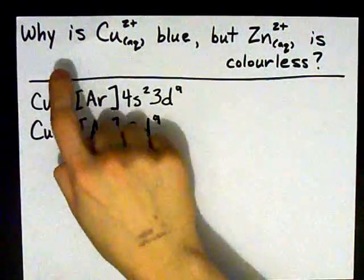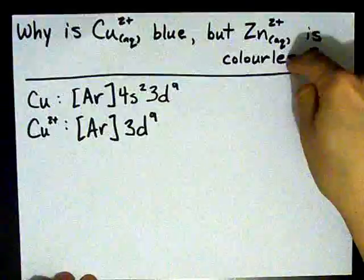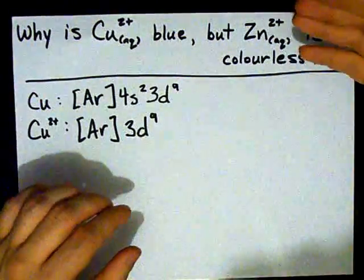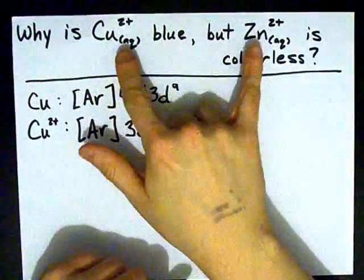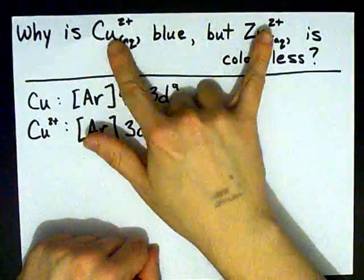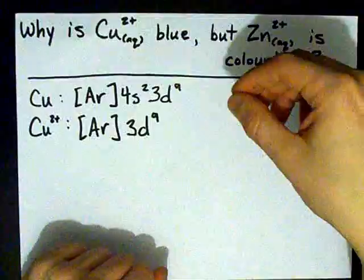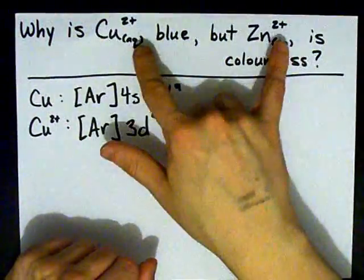Alright guys, why is copper 2 plus blue in solution but zinc 2 plus is colorless? It all comes down to the electron configurations of these two atoms and the fact that when these two ions are in aqueous solution, water becomes a ligand on the atom.